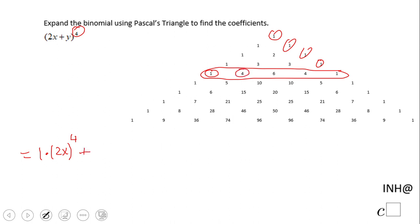Four times 2x to the third power, drop one, and y to the first power. In this case, you see the sum of the exponents has to be 4 because that's the original power.